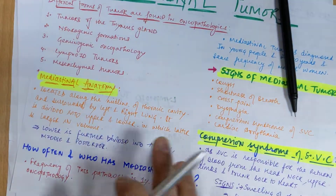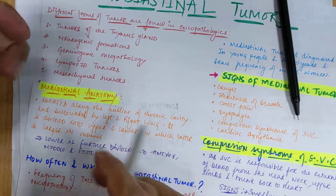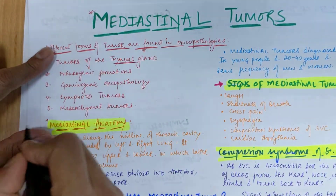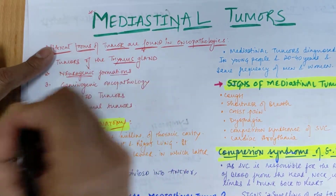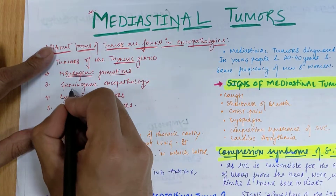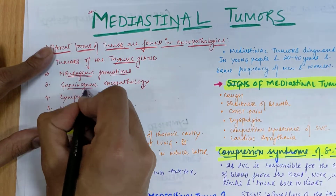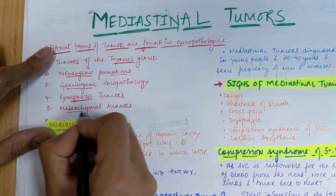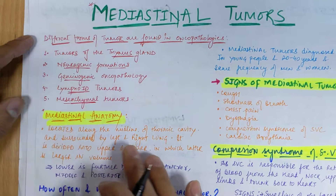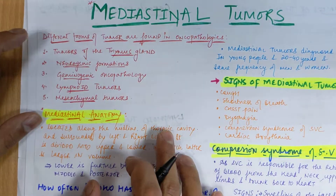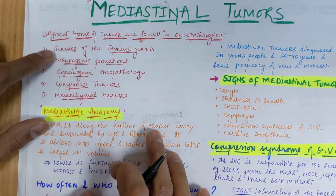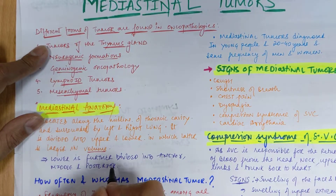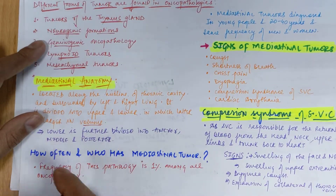We have different forms of tumor. First, tumors of the thymus gland; second, neurogenic formations; third, germinogenic oncopathologies from germ cells; fourth, lymphoid tumors of lymphoid origin; and fifth, mesenchymal tumors originating from soft tissues or superficial tissues.